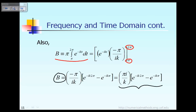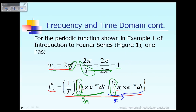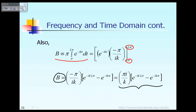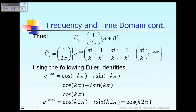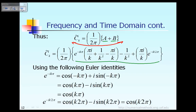So up to now, we already know how to calculate the values of A and B explicitly, and therefore we can easily calculate the value of c̃_k. The value of c̃_k is equal to 1 divided by the period 2π, times A plus B. If we substitute the values of A and B from the previous slide, the term marked in green represents A plus B combined.